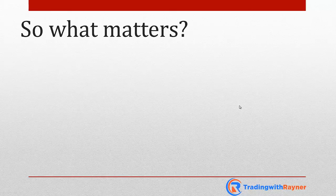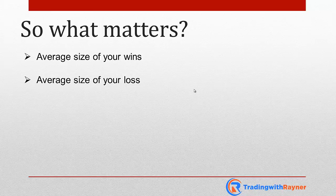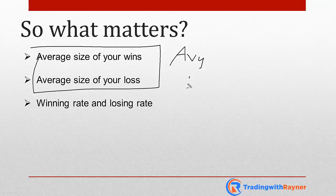So what actually matters? There are four key factors. First, the average size of your wins — over a large sample of trades, how much are you winning on average? Second, the average size of your losses — how much are you losing on average? Third and fourth, your winning rate and losing rate. Once you have these four factors, you can determine whether you'll be a consistently profitable trader in the long run. Note that your average wins and average losses together give you your average risk-to-reward.